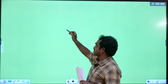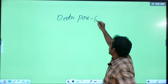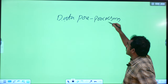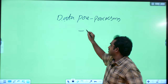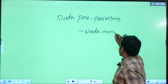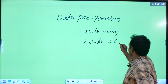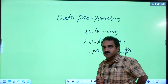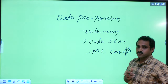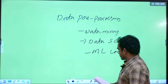Good morning students. Today I will discuss the concept of data pre-processing. Data pre-processing is used in data mining and data science — current technologies including machine learning concepts. Data pre-processing plays a vital role in data mining to extract knowledge, and the same applies to data science and machine learning. So what is called data pre-processing?